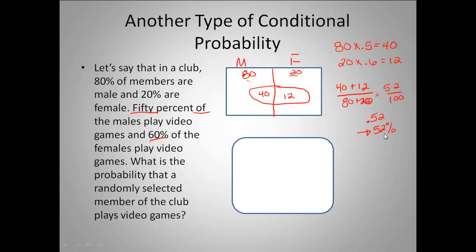52% doesn't come from just adding 50 and 60. It comes from the process we just did. Now we're going to look at that process and generalize it so we can apply it to all sorts of different situations.